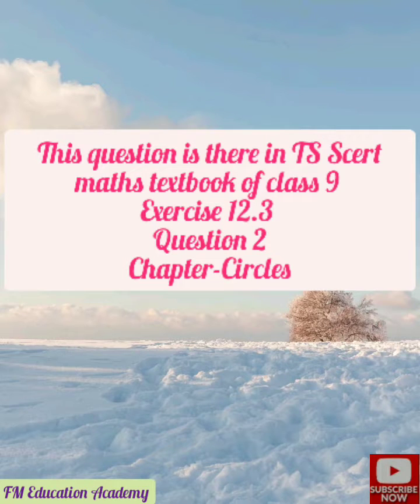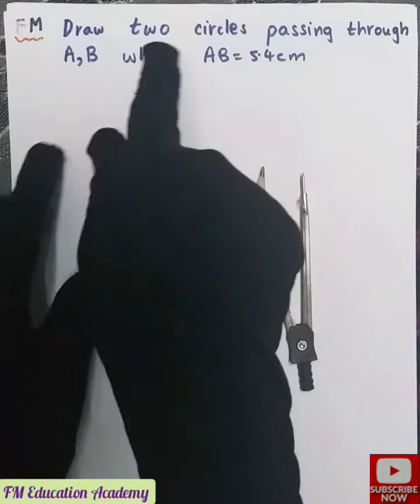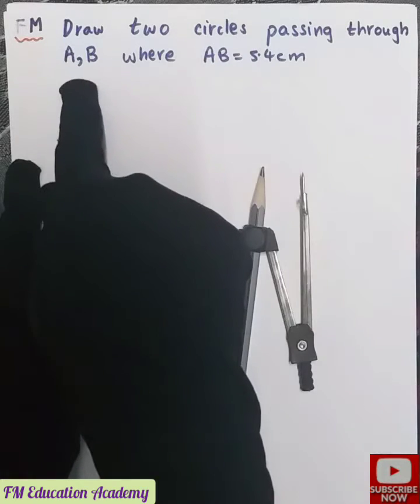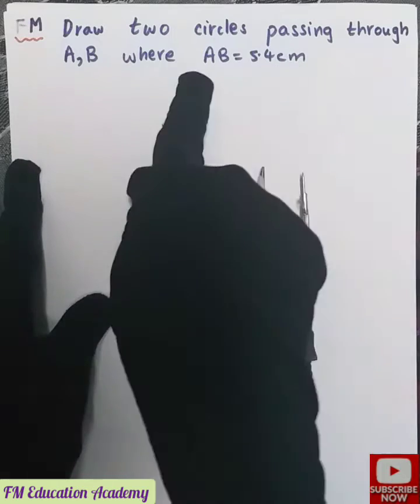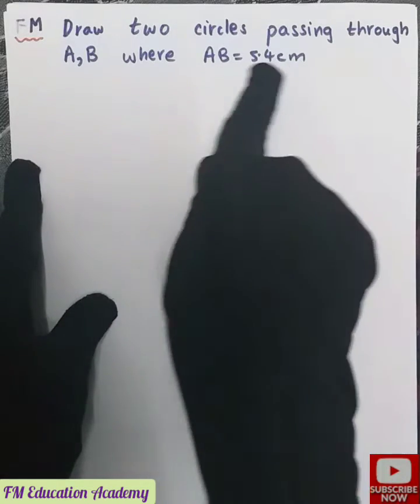So first it is asking us to draw two circles and those two circles should pass through A, B and AB value is given as 5.4 centimeter. So I should draw a line segment AB which is 5.4 centimeter.